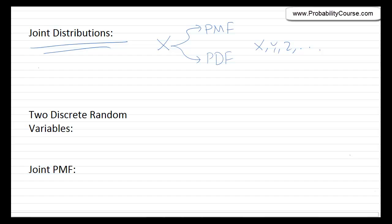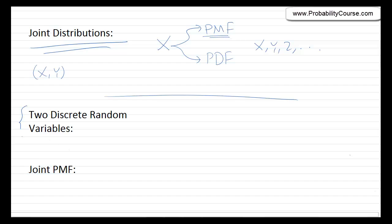We start with a situation in which I have two random variables, x and y. When you understand two random variables, it's easy to generalize to three and more. The discussion here is very similar to what we had for one random variable — we extend everything to two random variables. For example, for one random variable we talked about probability mass function; for two discrete random variables, we talk about joint probability mass function. First, we consider two discrete random variables, and in later videos, we talk about two continuous random variables.